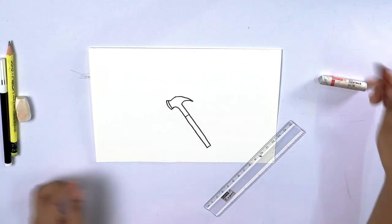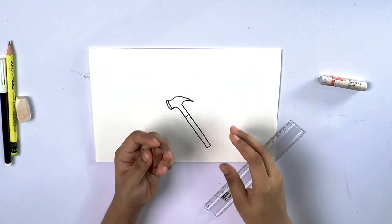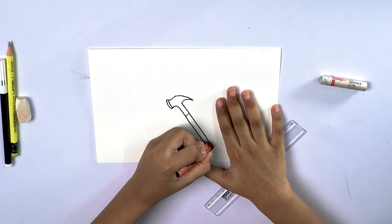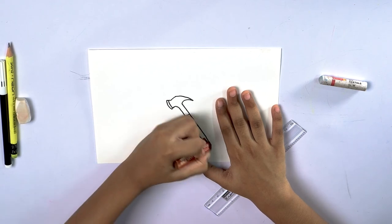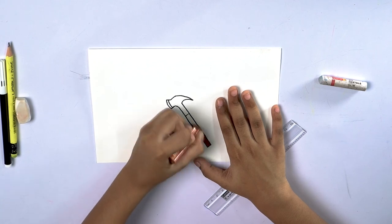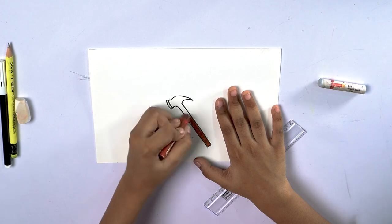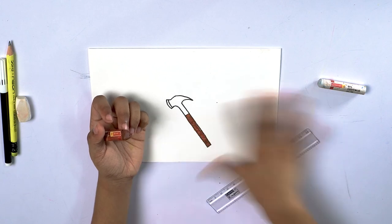And for coloring, for this part I will take brown. Like this, we will draw one more like this, and then we will draw one more like this.